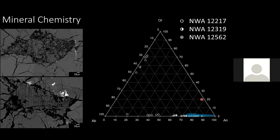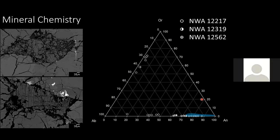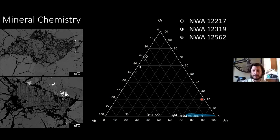Carl comments that the case for HED connection is stronger for 11319 and 12562 — which look to him like they're paired — but 12217, both from what's shown and in terms of oxygen isotopes, is more of a stretch. The case might be made that they're still not related. Zoltan agrees it's definitely a possibility, and notes that if more calcic plagioclase were found in 12217 it might bolster that case, but the brecciation style is different while in other respects they're really similar with a lot of overlapping composition.